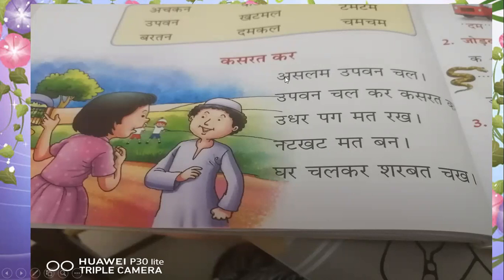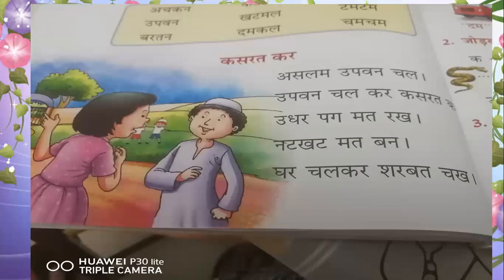Now one more time I am reading — repeat everyone with me. Put your finger on the first word. Aslam Upvan chal, Upvan chal kar Kasrat kar, Udhar pag maat rak, Natkhat mat ban, Ghar chalkar Sharbat chak. You have just read all the four-letter words and the poem. Do practice. Thank you.